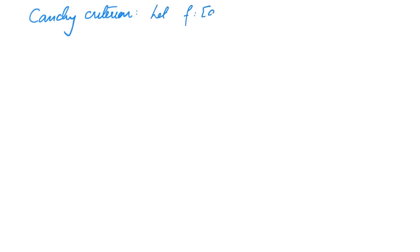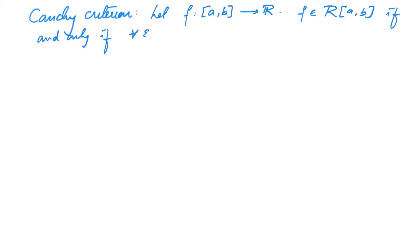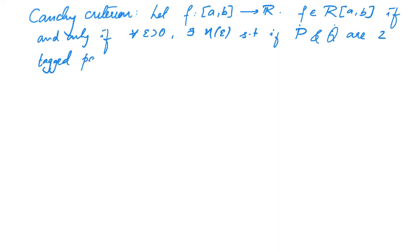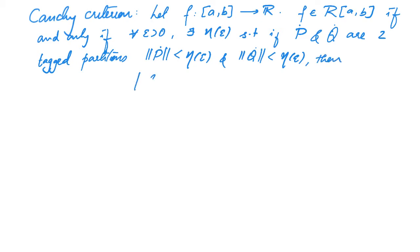Let f be a function from [a,b] to ℝ. Then f belongs to R[a,b] if and only if for every epsilon greater than zero there exists an eta of epsilon such that if P-dot and Q-dot are two tagged partitions with norm of P-dot less than eta of epsilon and norm of Q-dot less than eta of epsilon, then |S(f, P-dot) − S(f, Q-dot)| is less than epsilon.